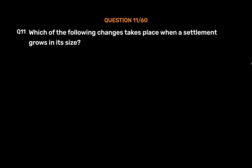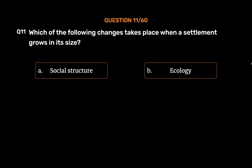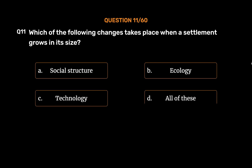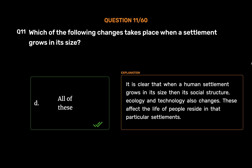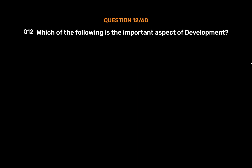Question number 11: Which of the following changes takes place when a settlement grows in its size? Option A: social structure, option B: ecology, option C: technology, option D: all of these. The correct answer is option D, all of these. It is clear that when a human settlement grows in its size, its social structure, ecology, and technology also change. These affect the life of people residing in that particular settlement.